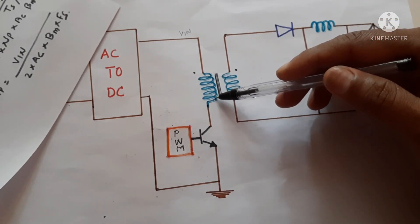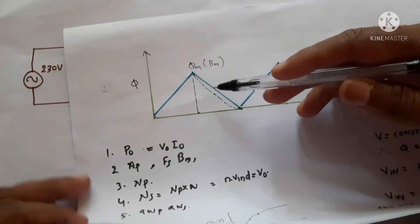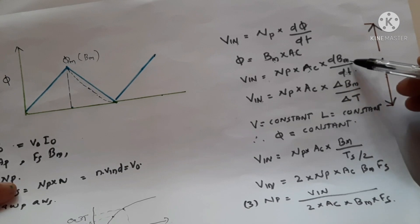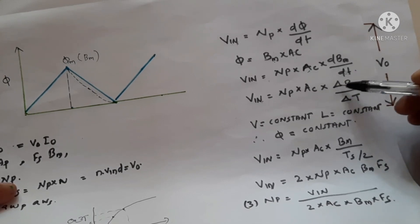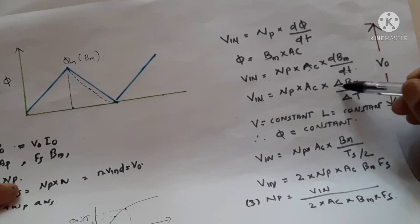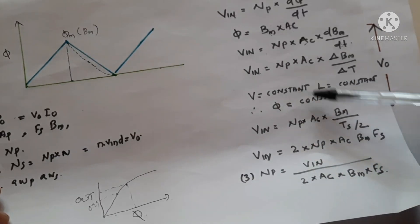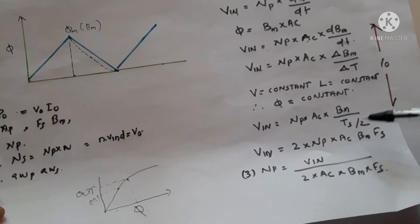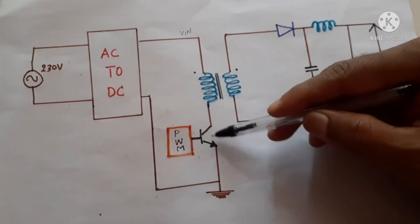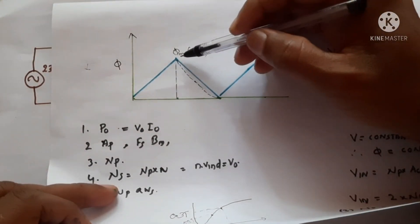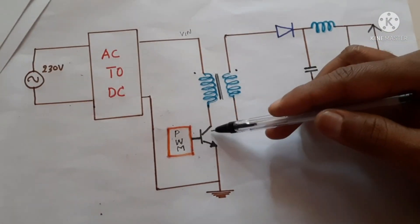The flux also increases linearly. Since it changes linearly, we write delta Bm / delta t. So the equation becomes: Vn equals Np times Ac times Bm divided by delta t. If we turn on the transistor for a particular time, the flux will increase up to its maximum value.